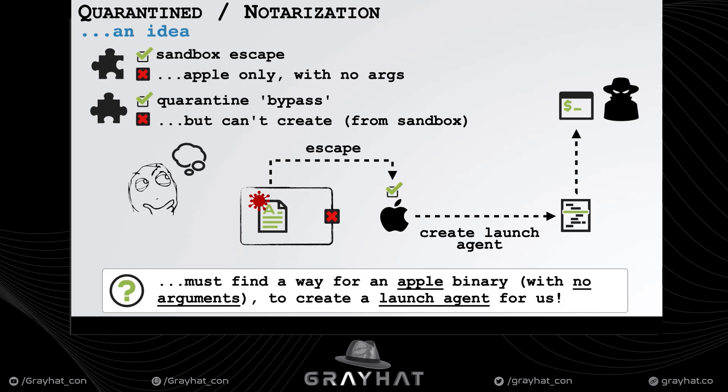So we have all the pieces, but can't put them together. We can escape the sandbox via a login item, but login items cannot take arguments, and can't be third-party binaries due to notarization. We need a way for an Apple binary with no arguments to create a launch agent for us.